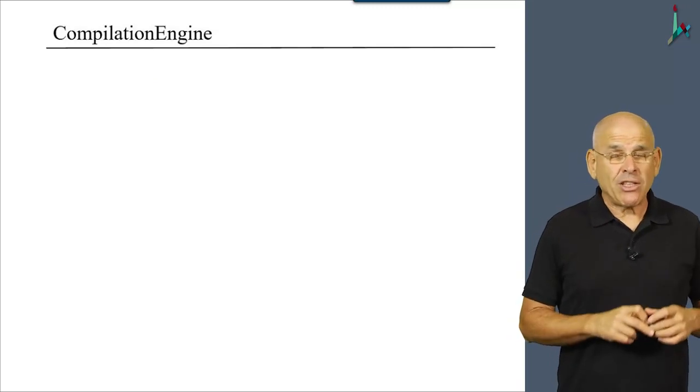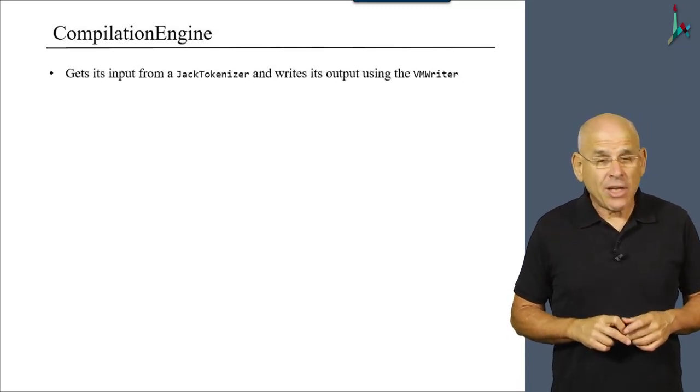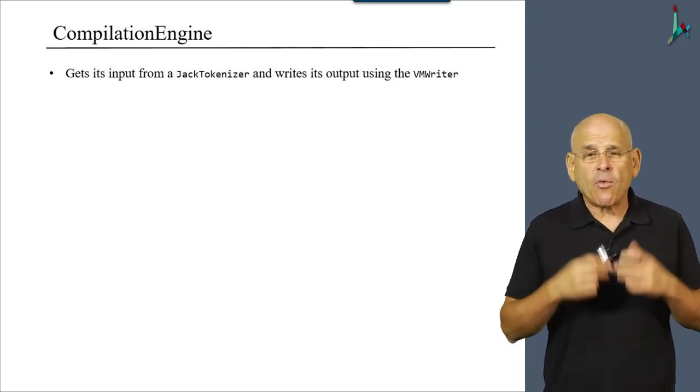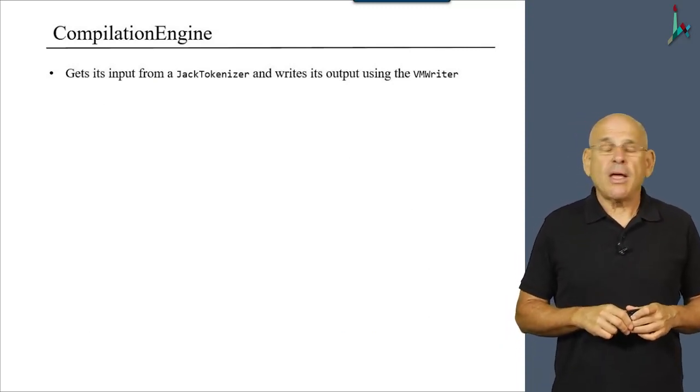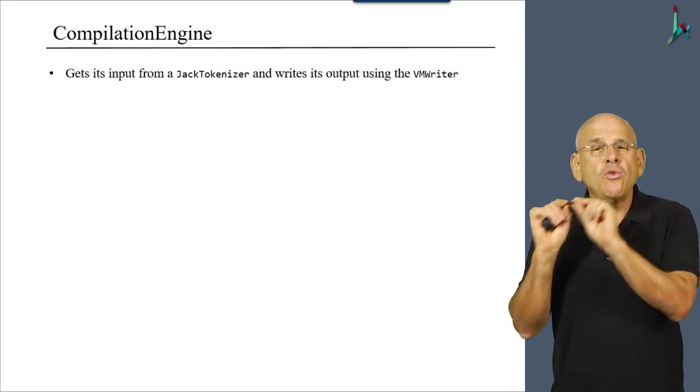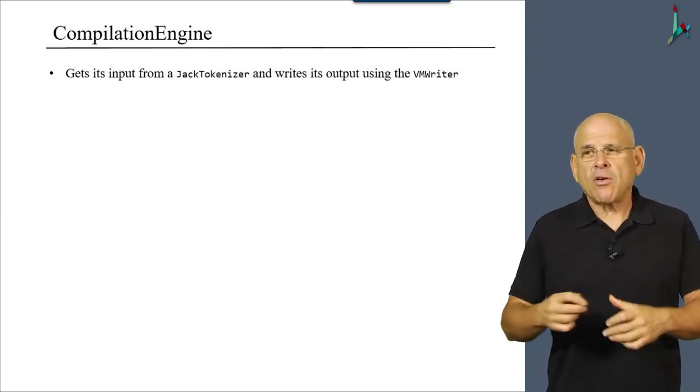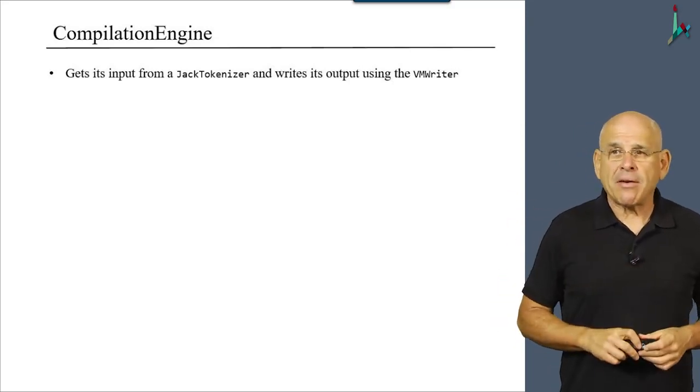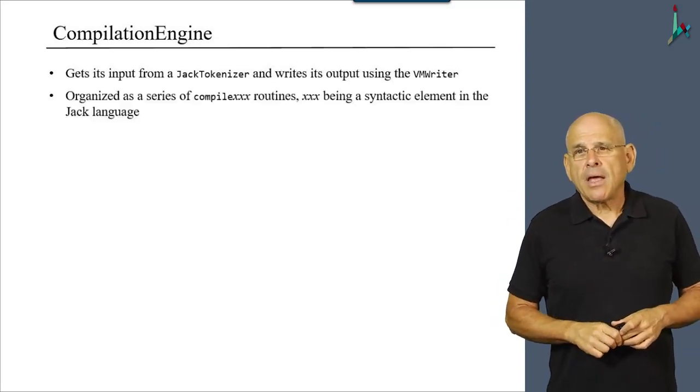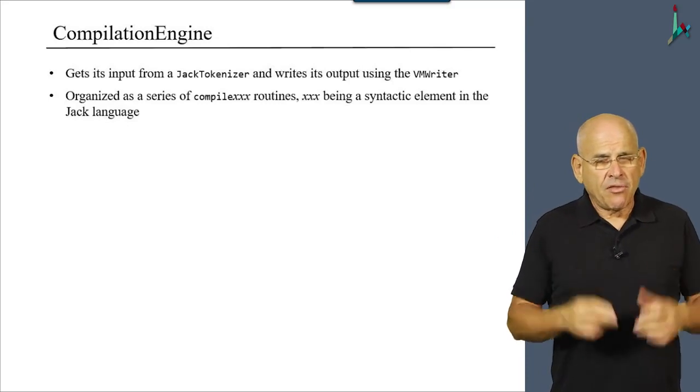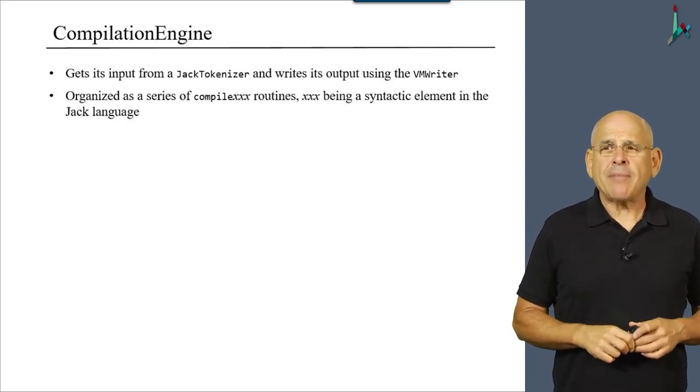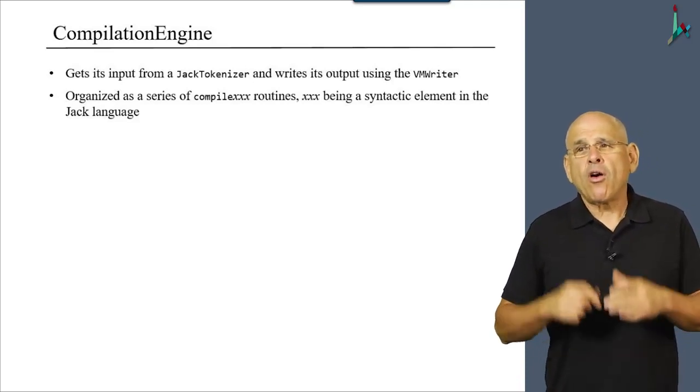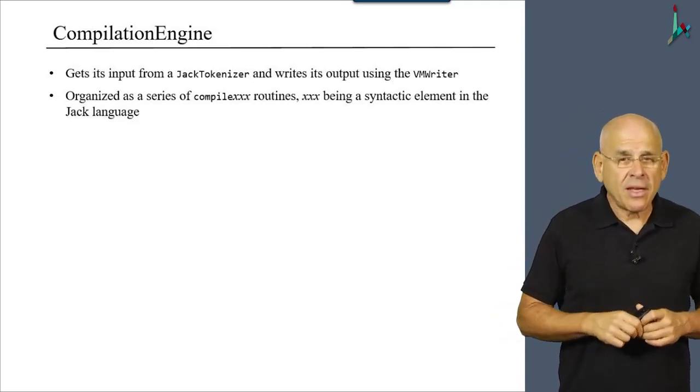Finally, we have the compilation engine. And the compilation engine gets its input from the Jack tokenizer and writes the output to the output file using the VMWriter. So, output is generated by calling VMWriter methods. The compilation engine, if you recall, we discussed it several times in the previous module and this one, it is organized as a series of compileXX routines.